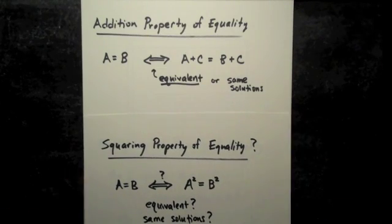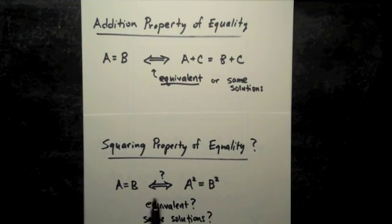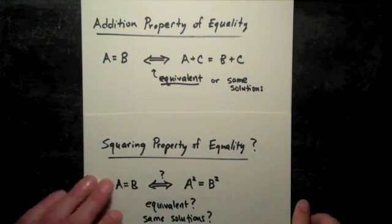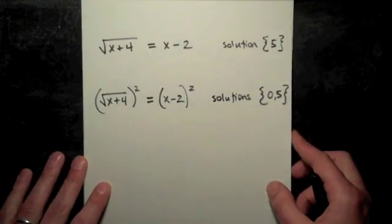What we're interested in is can we square both sides of an equation? So if I start with A equals B and I square both sides, does that give me an equivalent equation? Equivalent means same solutions. Well, if you think about the examples that we just did, the answer is no.